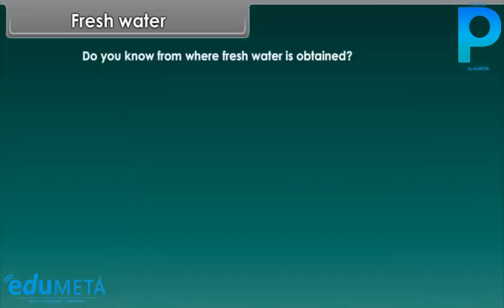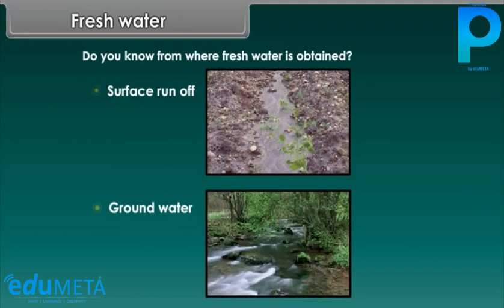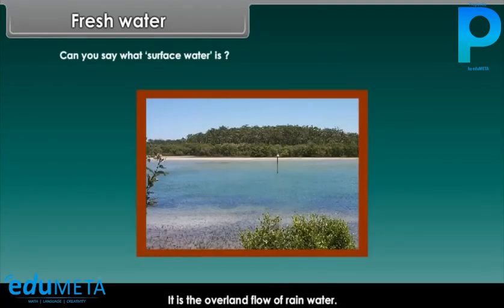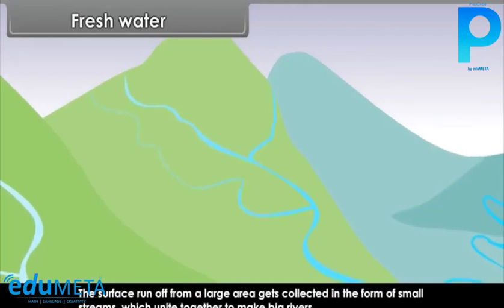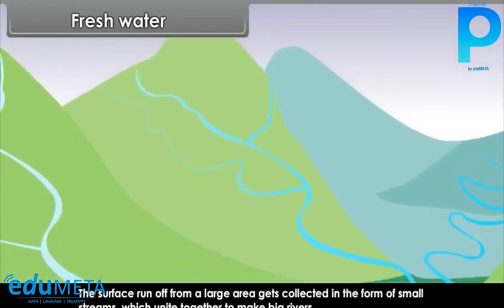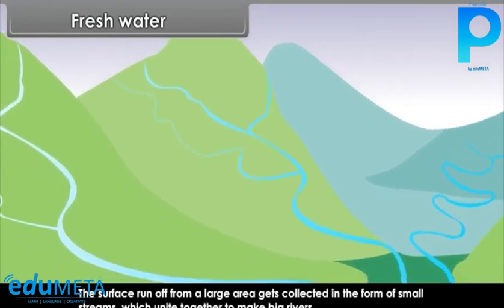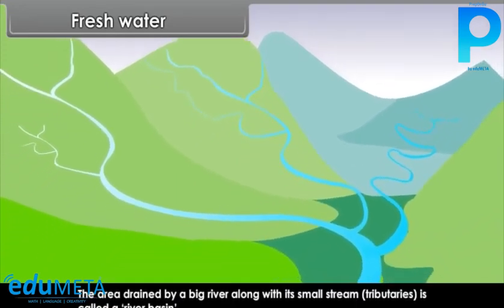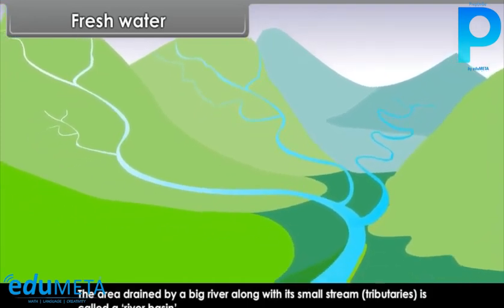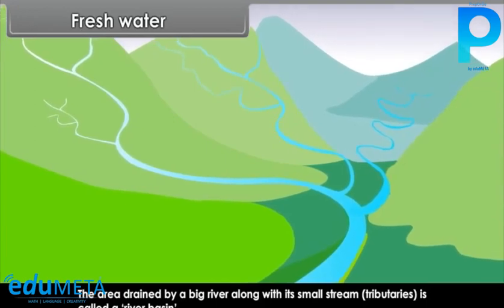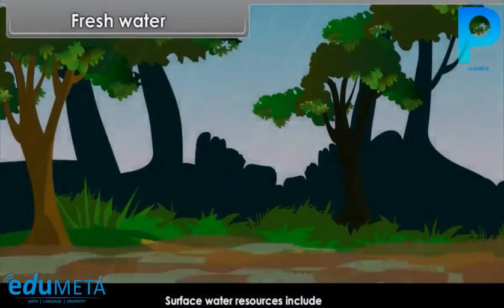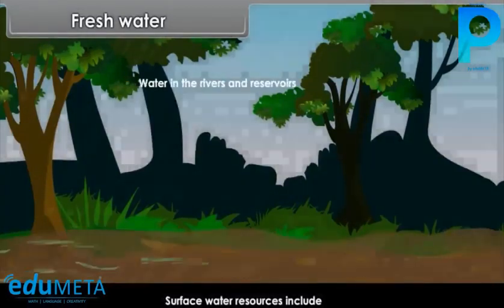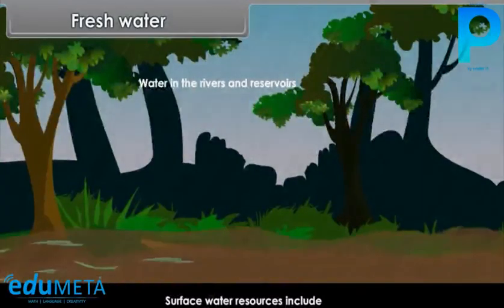Do you know from where fresh water is obtained? It comes from surface runoff and ground water. Surface water is the overland flow of rain water. The surface runoff from a large area gets collected in the form of small streams, which unite together to make big rivers. The area drained by a big river along with its small streams is called a river basin.